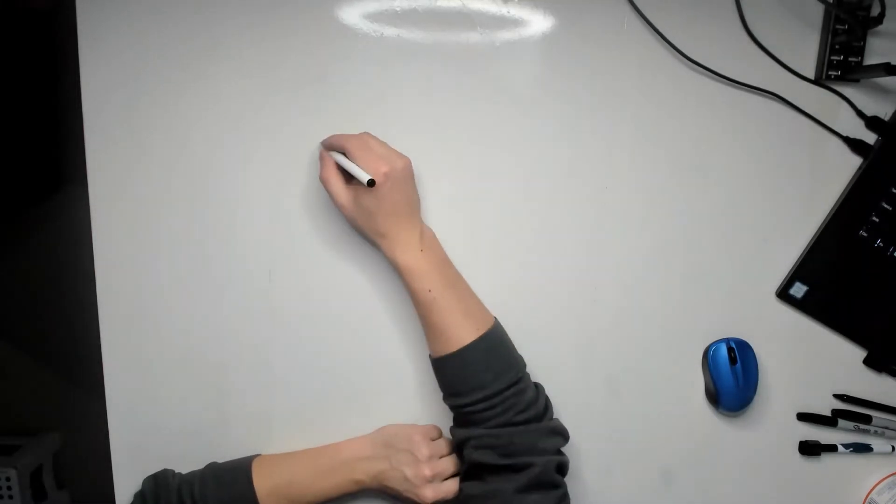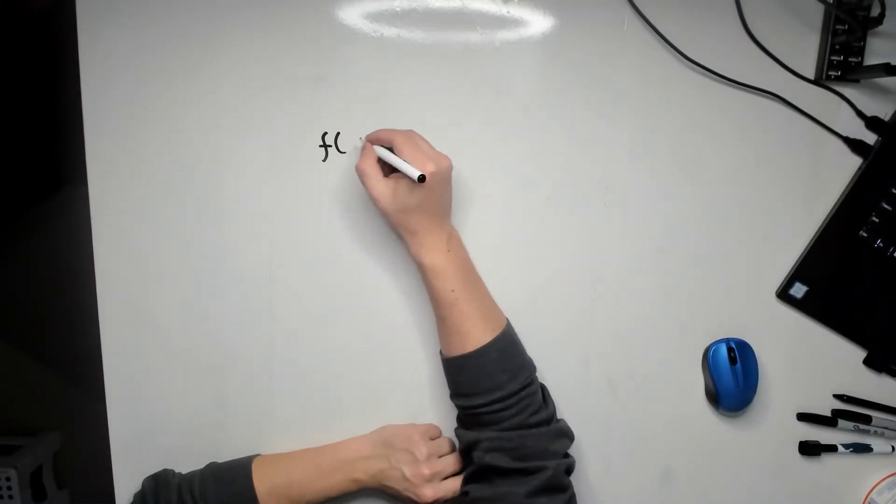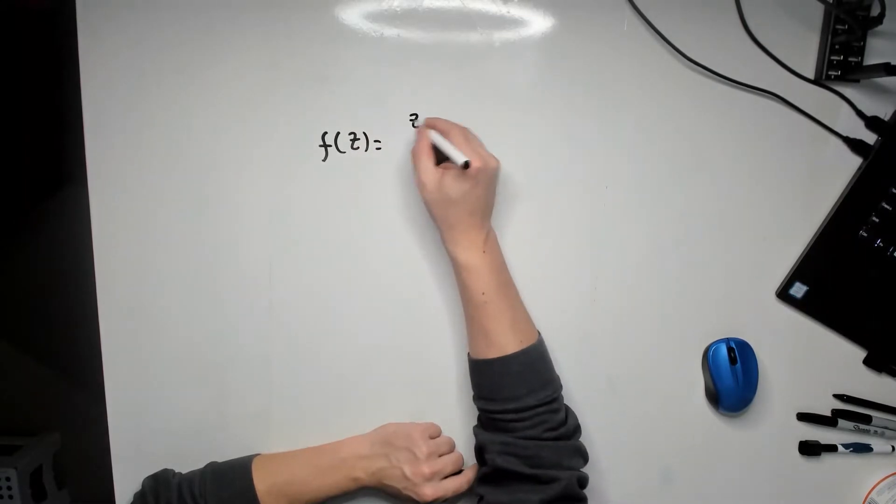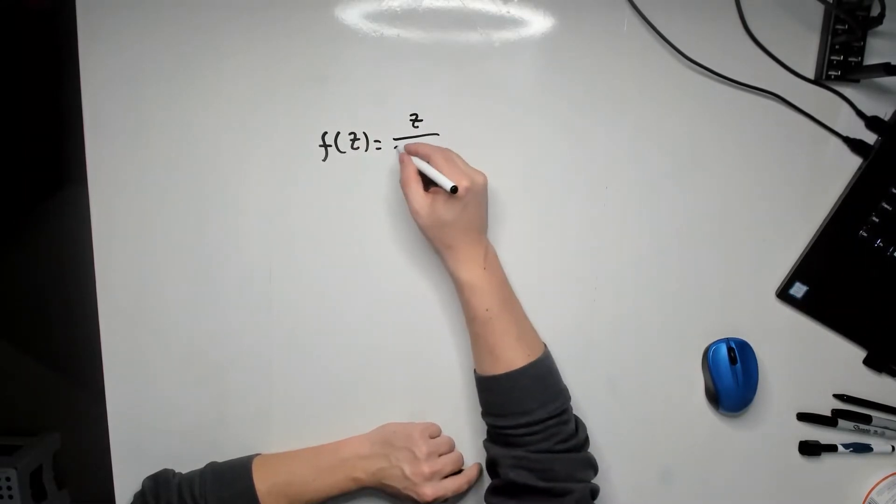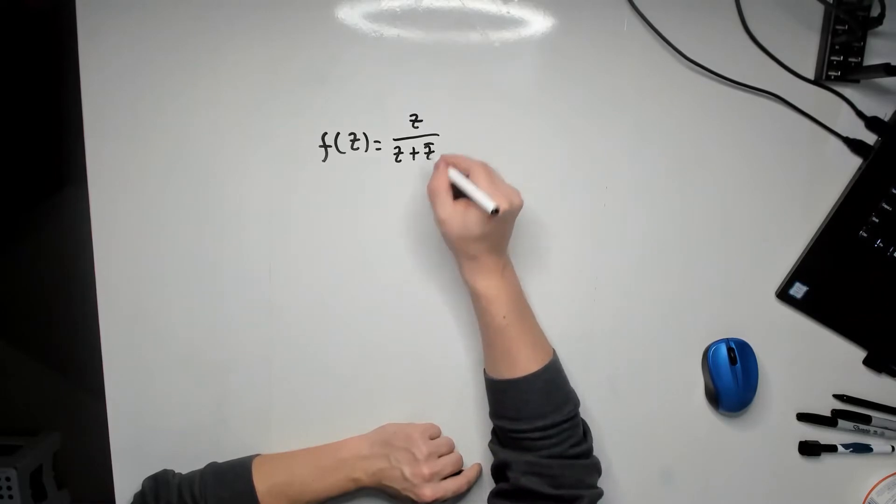So in this one I'm going to show you how to find the domain of a complex valued function. Let me make one up. It's going to be f of z equals z divided by z plus z bar as an example.